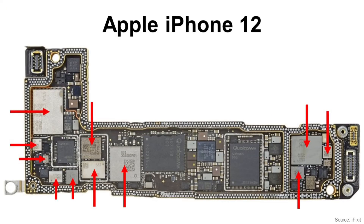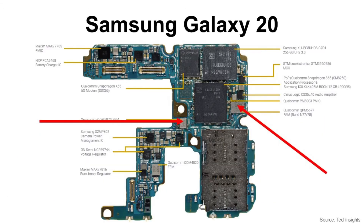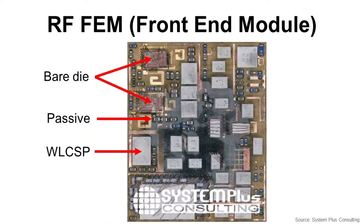If you look at the board of the Apple iPhone 12 smartphone, there are several packages with silver-gray color. Those packages are typically SIPs. You can also find SIP packages in the Samsung Galaxy S20 smartphone. This is an example of an RF front-end module to understand what kinds of devices are in SIP and how it looks. As you can see in the cross-section, there are a lot of bare dies and passive components.